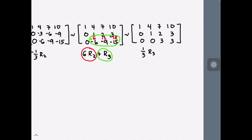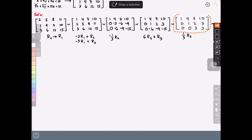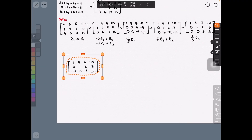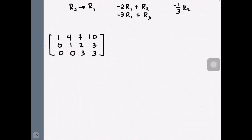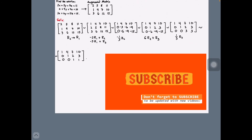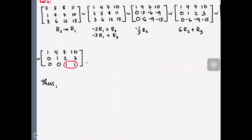To make the positive three a positive one, we divide by three or multiply by one-third. Observe that the last two entries in the third row mean that z is equal to one. For example, if that entry were four instead, it would mean z is equal to four.